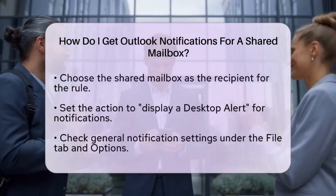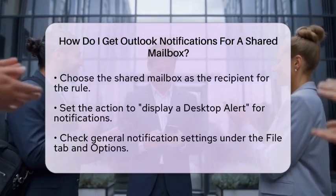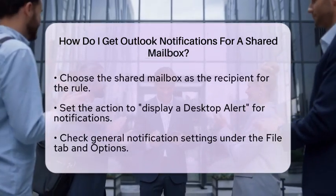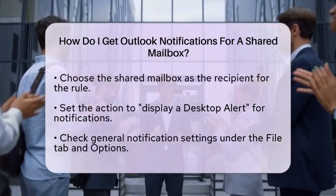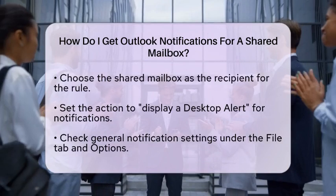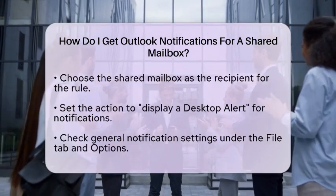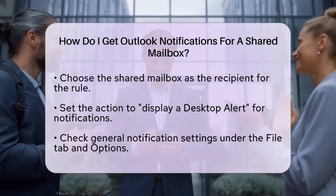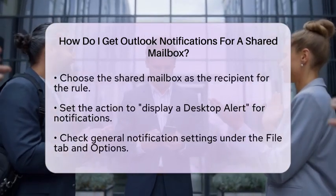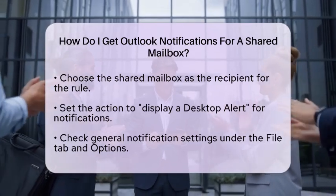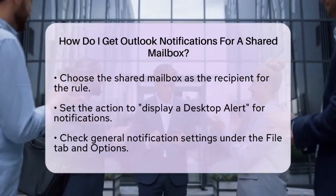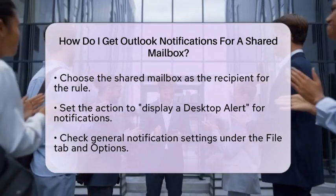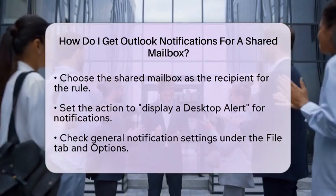Next, let's check your general notification settings. Go back to the File tab and select Options, then navigate to the Mail tab. In the Message Arrival section, make sure the options Play a sound and Display a desktop alert are checked. This setting will apply to all mailboxes you have configured in Outlook, including the shared mailbox.